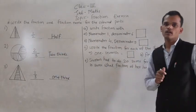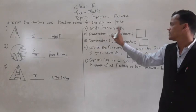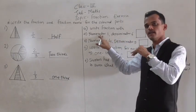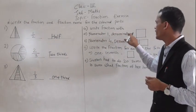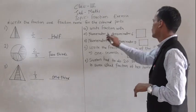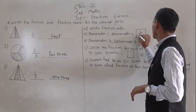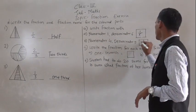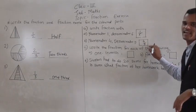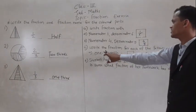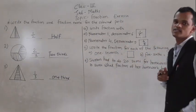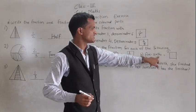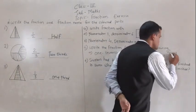Next, question number four: write the fraction with numerator and denominator. Numerator one and denominator six means write one at the upside of the horizontal line and six at the downside, so the fraction is one upon six, or one by six. Then next: numerator four and denominator nine, this fraction is four nine. Then write the fraction for each of the following: one seven means one is numerator and seven is denominator — write one over seven. Next, five six: five is numerator and six is denominator — write five over six.